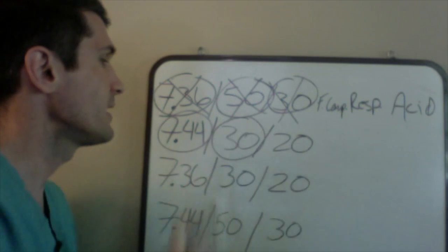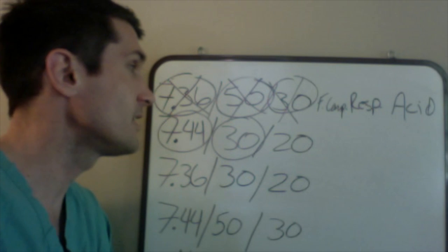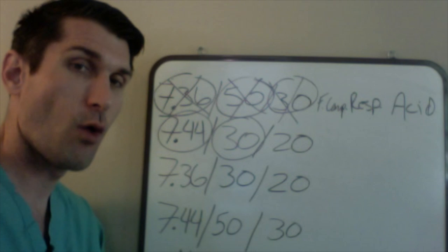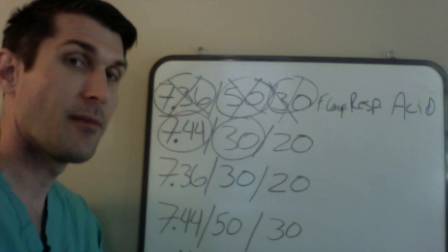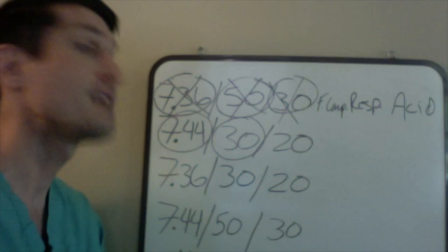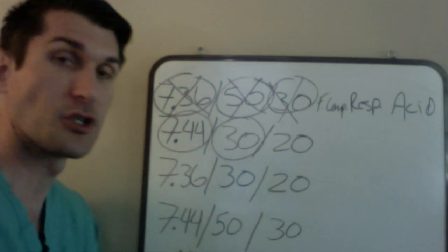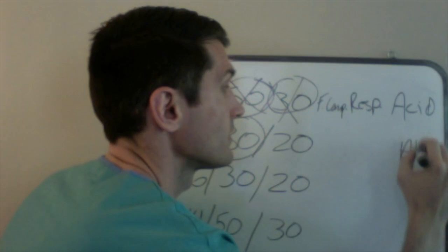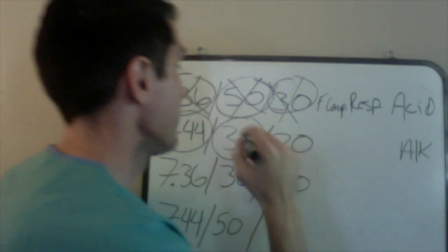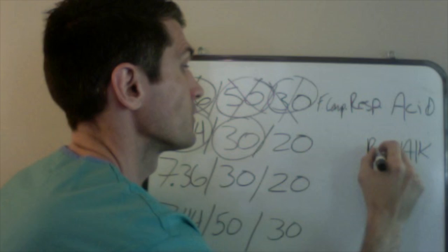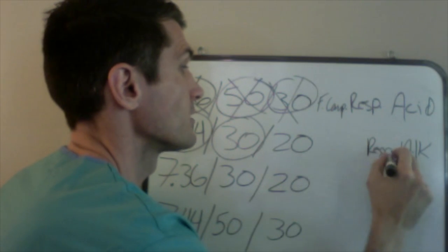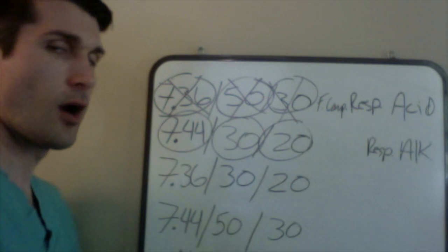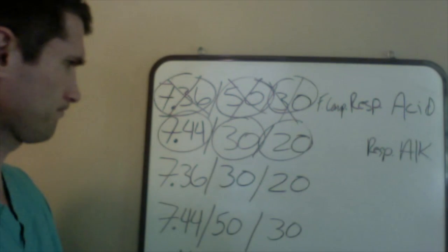We're going to look at our two parameters and see which one's out of range. The CO2 is decreased — there's less of it than normal, so it's behaving alkalotically, behaving basically. So we already found our perpetrator. Based on our pH I'm going to write 'alkalosis,' and based on the CO2 finding I'm going to write 'respiratory' because he was the one responsible. Now I'm going to look at my third parameter — the bicarb — and see: did it help in this situation?